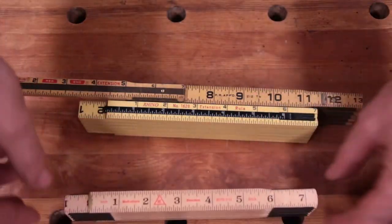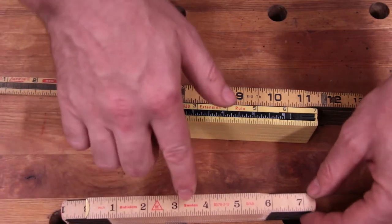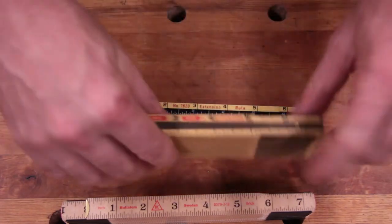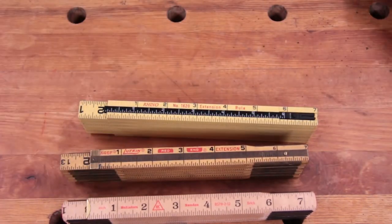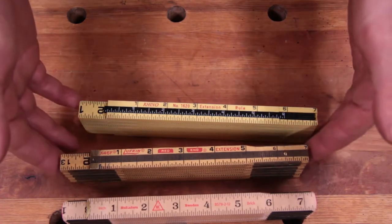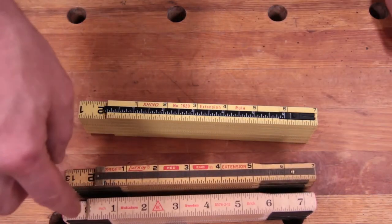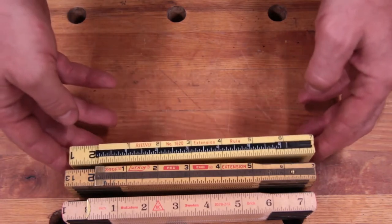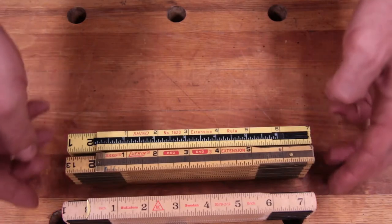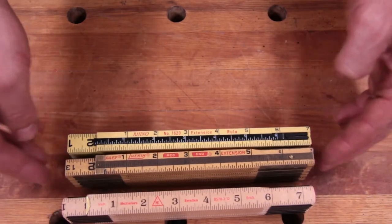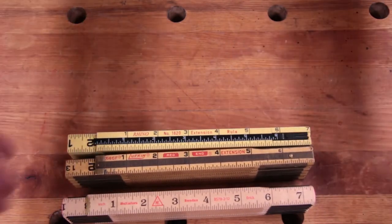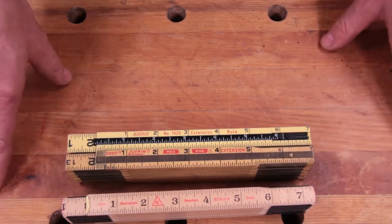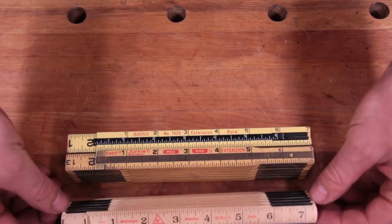This is a Holtifors, made in Sweden. Interestingly, Holtifors was actually the first company to make wooden folding rulers. Lufkin was importing these in the early 1900s, and then World War One happened and it got to be really difficult to import stuff from Sweden. So Lufkin started making their own rulers. They kind of copied Holtifors' design.